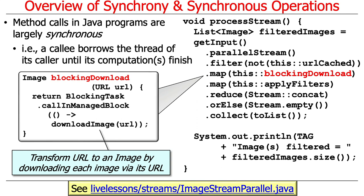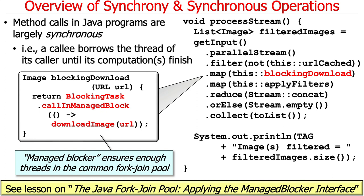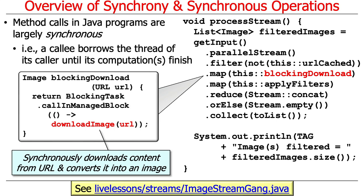Here's an example of what the code might look like to do this. You can see that we're going to call the blocking download method, which is passed as a method reference, as a behavior. In this particular case, we're going to transform an image by downloading each image using its URL. You can see we use the call and manage blocker method here, which will ensure that there are extra threads in the common fork-join pool to avoid running out of threads when calls are blocking.